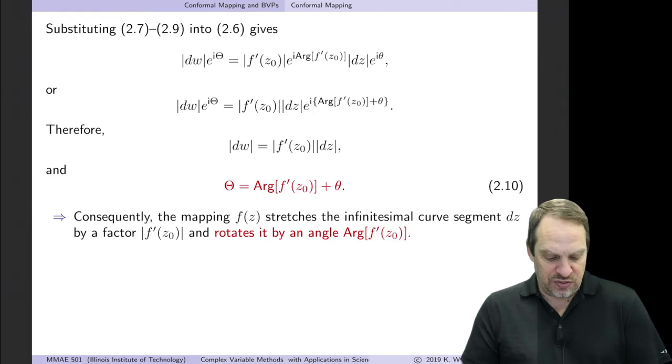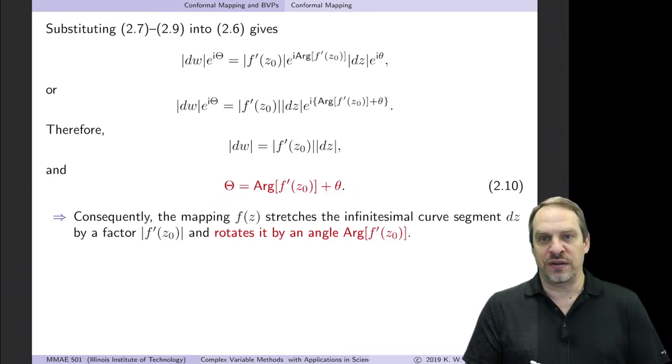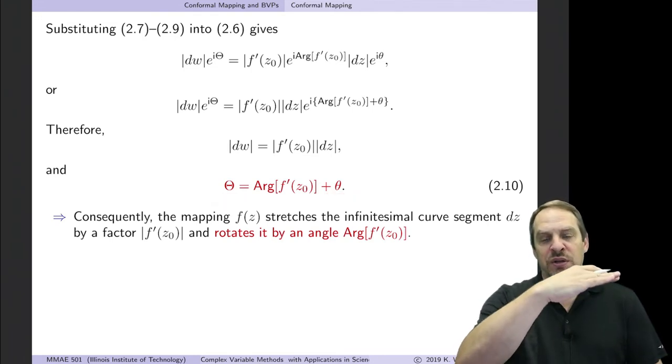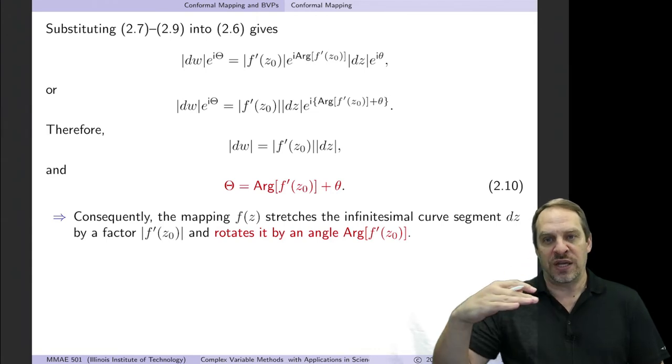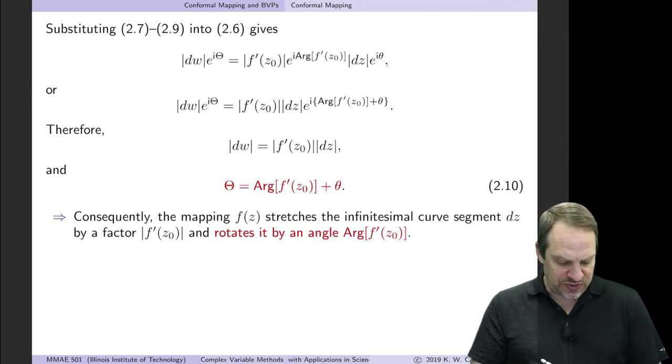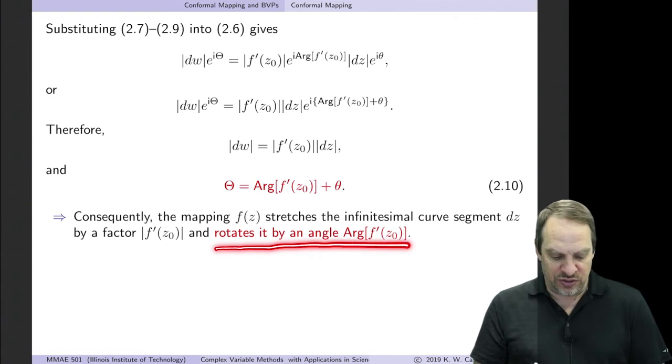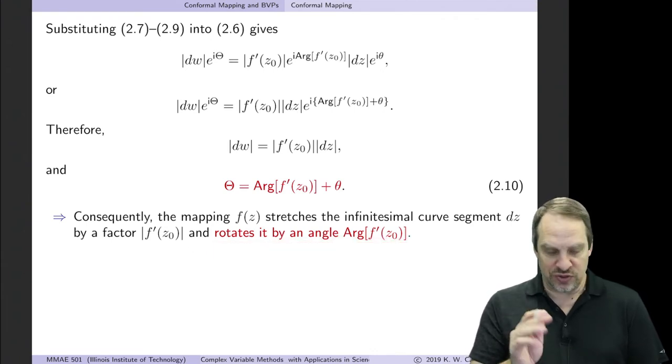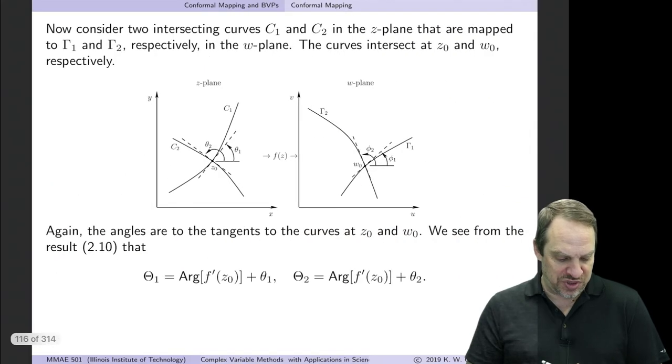And then capital Φ has to be the same as arg f prime of z₀ plus θ₀. That's the second expression here. This is really the important one because what it does is it shows how these angles are related. Remember, the angle to C and the angle in the w-plane to capital γ. So the difference between them is the argument of the mapping, f prime of z. So consequently what you see is that the mapping rotates by an angle arg f prime of z₀. So we're going to take a look at what that means for us.